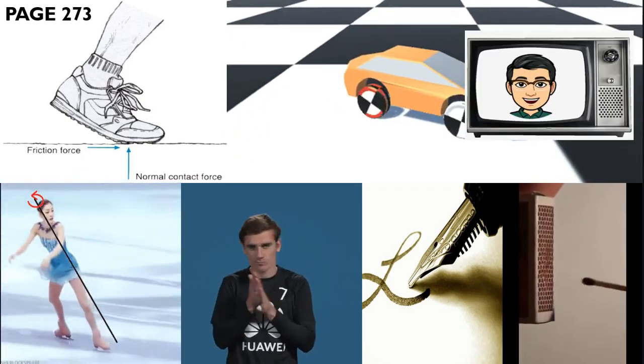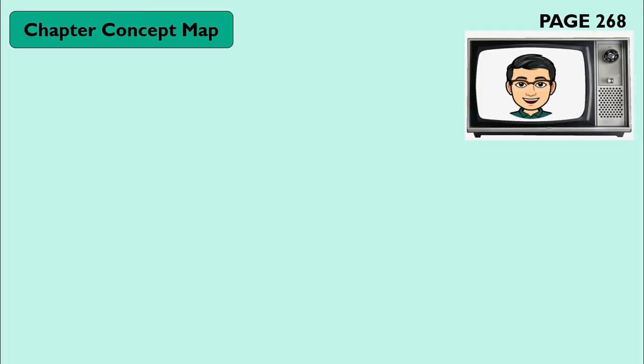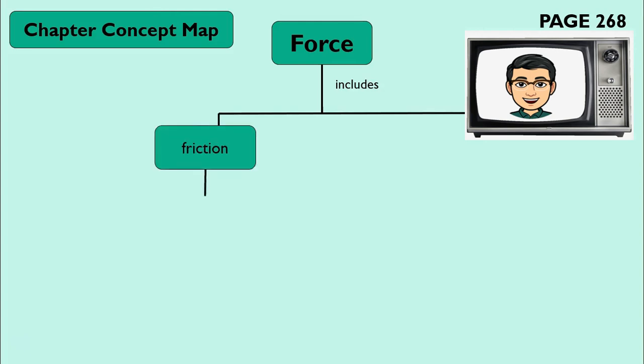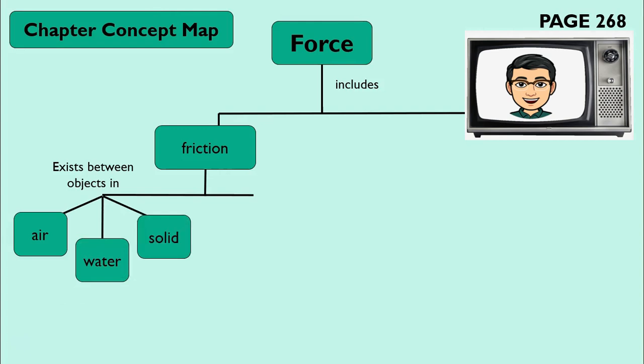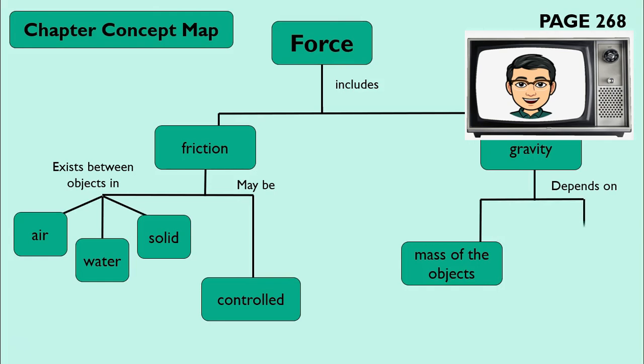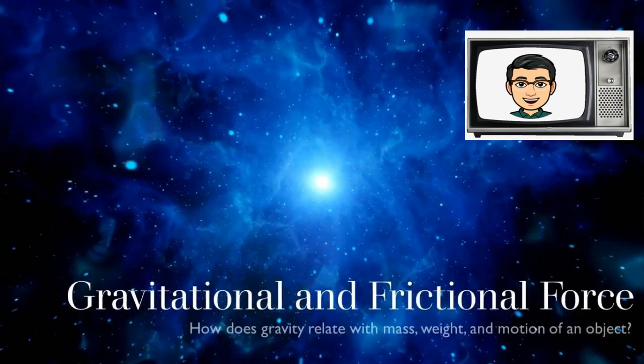What is our takeaway from our lesson today? Let's go back to our chapter concept map. Force includes friction—friction exists between air, water, and solid objects and may be controlled. Force also includes gravity, which depends on the mass of an object and the distance between objects. Goodbye, Grade 6. See you in our next lesson.